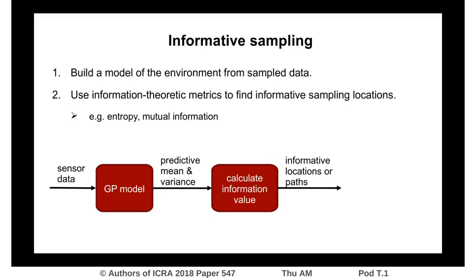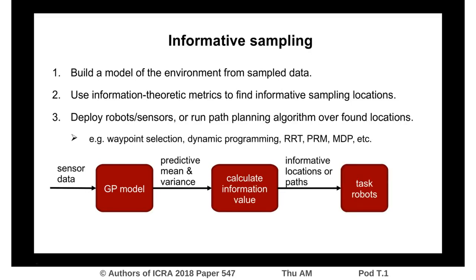These locations can be used for deploying robots or sensors. When you create the model online, incorporating newly sampled data, this is called adaptive informative sampling.